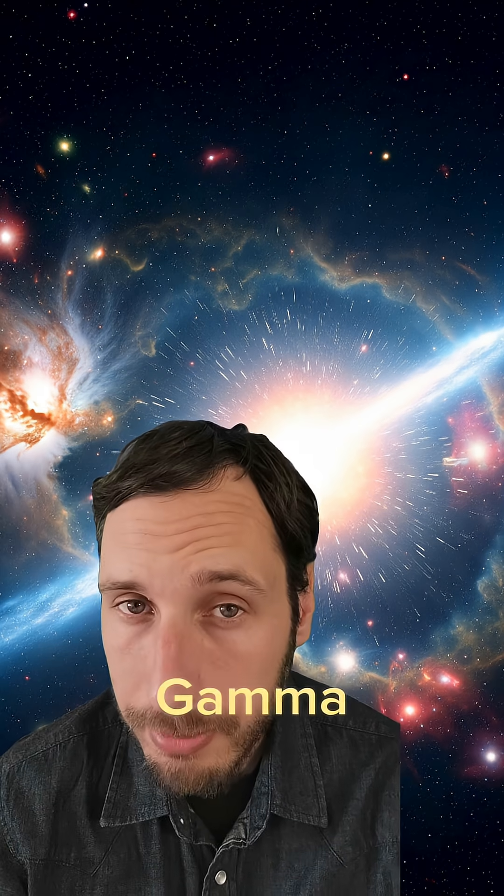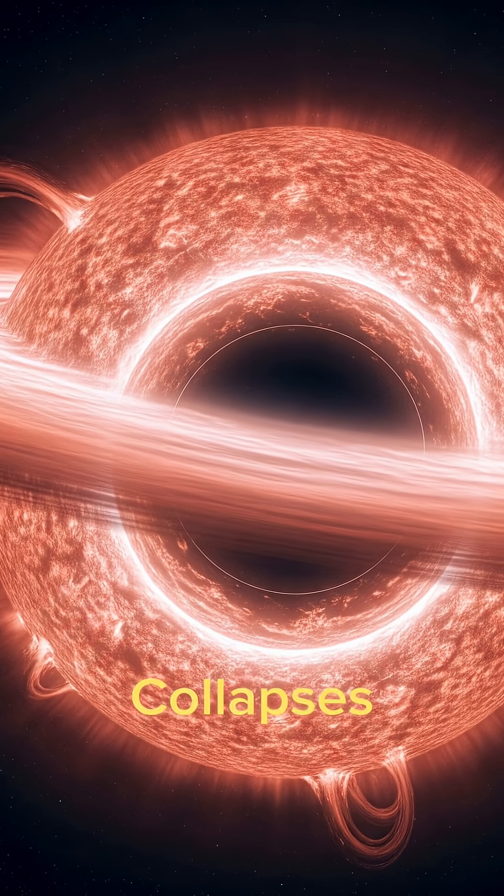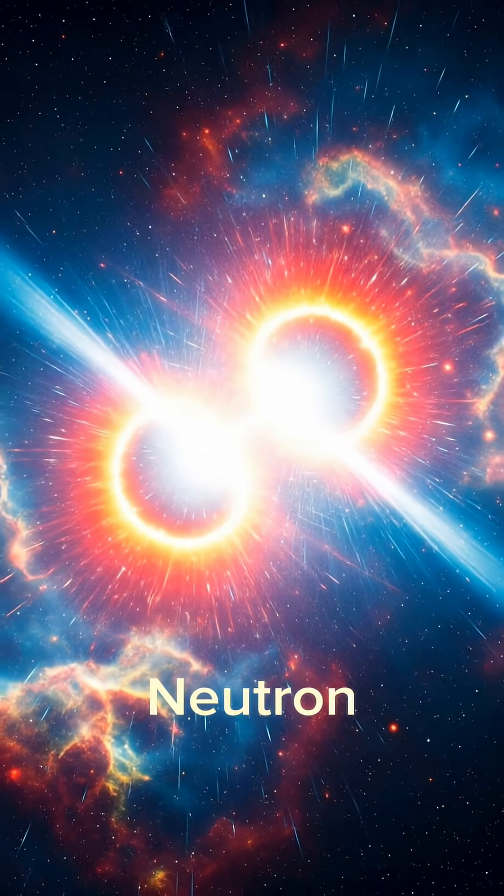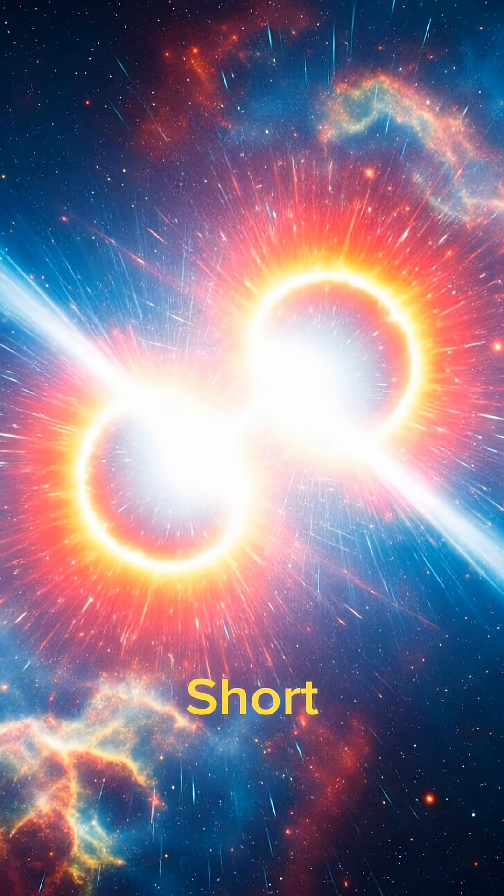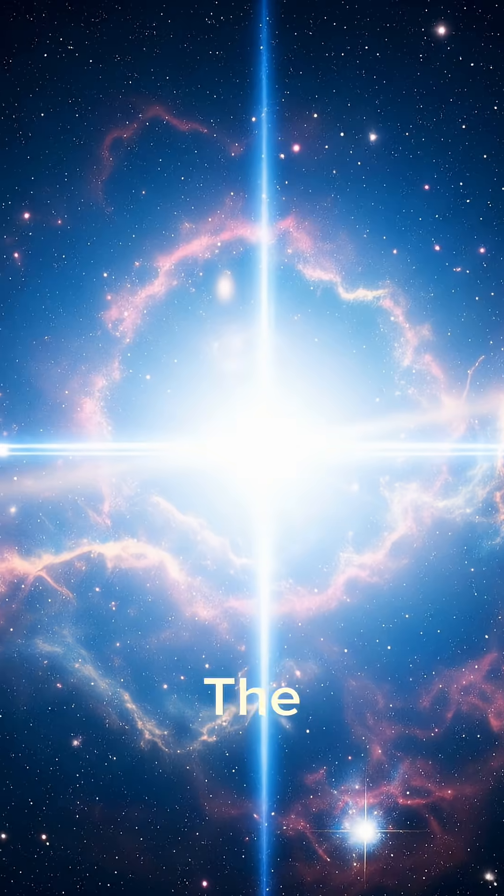This monstrosity is known as gamma ray bursts or GRBs. They occur when a giant star collapses into a black hole or when two neutron stars collide, sending short but powerful gamma radiation across the universe that is quintillion times brighter than the sun.